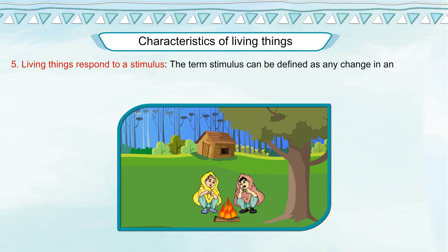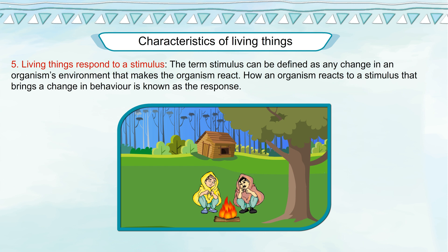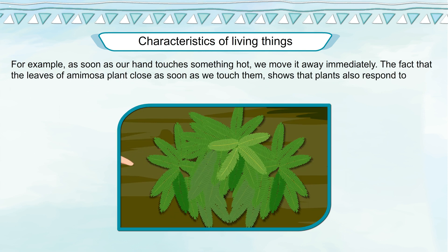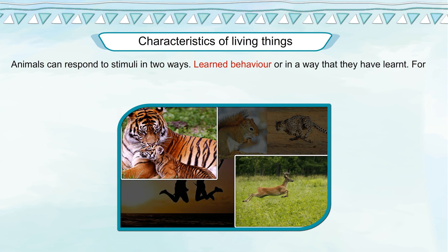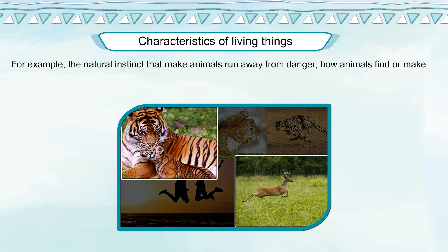Living Things Respond to a Stimulus: A stimulus can be defined as any change in an organism's environment that makes the organism react. How an organism reacts to a stimulus that brings a change in behavior is known as the response. For example, as soon as our hand touches something hot, we move it away immediately. The leaves of a mimosa plant close as soon as we touch them, showing that plants also respond to stimuli. Animals can respond through learned behavior — such as how we learn to read and talk, or how a mother bear teaches her cubs to fish — or through instinct, such as the natural instinct that makes animals run away from danger, find shelter, or find food and water.